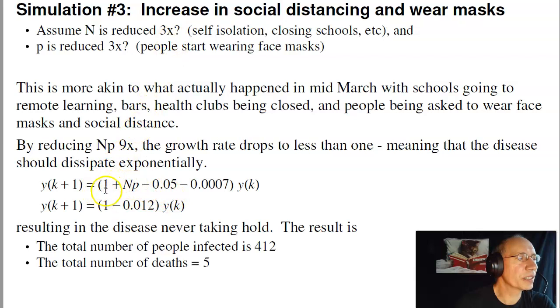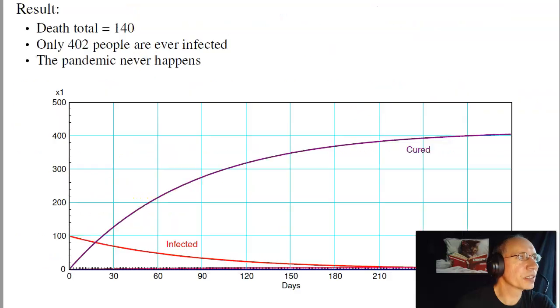What that means is that the disease never spreads, never takes hold. Instead of shooting up, it immediately starts dropping off. And here I give an initial condition that assumes 100 people are infected initially, it goes away. So by doing both self-isolation and wearing masks, I can basically make the disease never happen. There is never a pandemic.